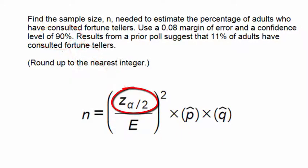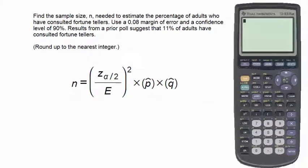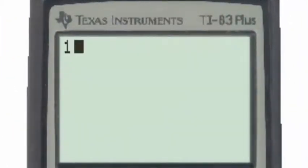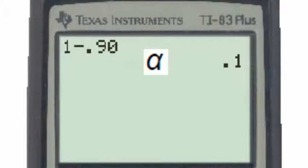We will find z subscript alpha divided by 2 using the TI-83. Going to the calculator, we'll put in 1 minus 0.90, which is 1 minus the level of confidence. This gives us alpha, which in this case is 0.1 or 10 percent.